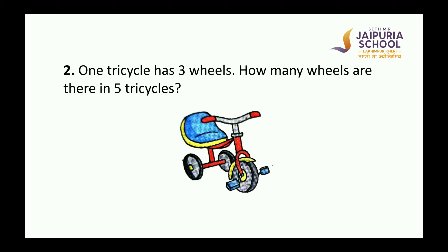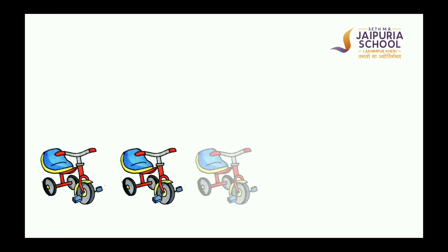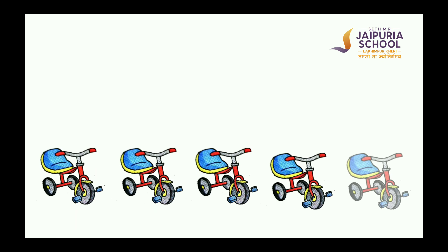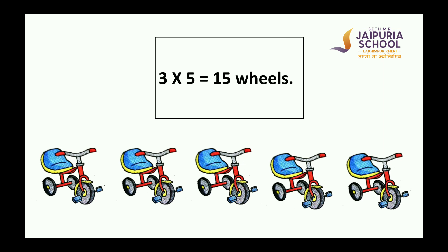Let's solve another word problem. One tricycle has 3 wheels. How many wheels are there in 5 tricycles? Let's solve this word problem with the help of pictures. Let's arrange the tricycles: 1, 2, 3, 4, 5. Now we have 5 tricycles. As we know each tricycle has 3 wheels, so we can say 3 taken 5 times is equal to 15. So 5 tricycles have 15 wheels.